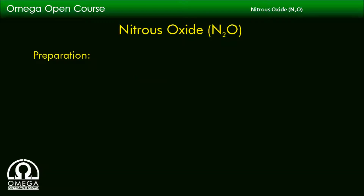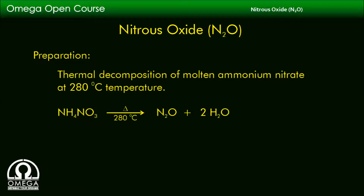Let us look at how Nitrous Oxide can be prepared in the laboratory. It is prepared by thermal decomposition of molten ammonium nitrate at about 280°C. The reaction involved is: NH₄NO₃ → N₂O + 2H₂O.